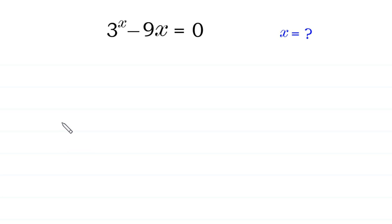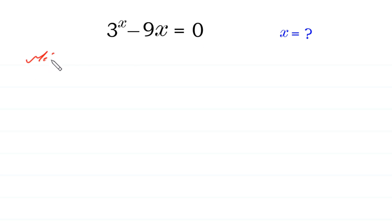Hello, welcome to how to solve this very nice exponential equation: 3 to the power x minus 9x is equal to 0. We will solve it by two methods. So let us start with Method 1.